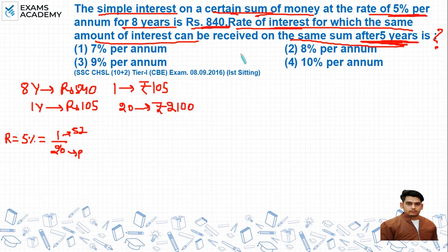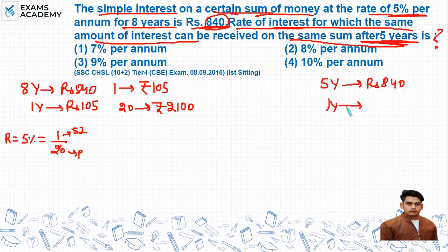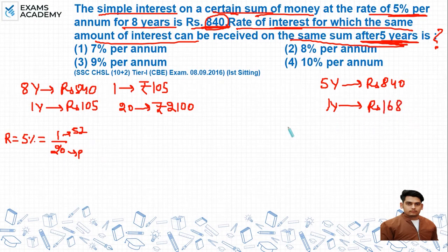अब question में कहा गया कि यही Rs. 840 का interest अगर हमें मिले 5 years के लिए। तो यह 5 years का interest हमें given है Rs. 840। अगर यहां से 1 year का interest calculate करें तो यह आएगा Rs. 168। यह 1 year का हमारे पास interest आ रहा है।